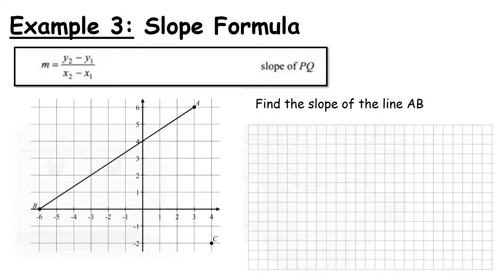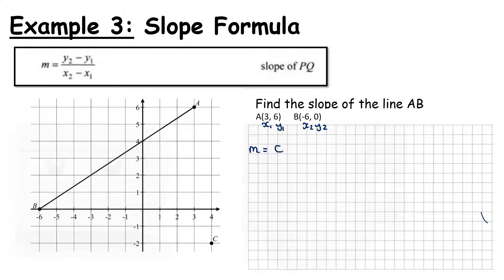Now let's calculate the slope using the slope formula. The formula is M = (Y2 − Y1) / (X2 − X1), where M is the symbol we use for slope — anytime you see the letter M when dealing with a line, it refers to slope. Using A = (3, 6) as (X1, Y1) and B = (-6, 0) as (X2, Y2): M = (0 − 6) / (-6 − 3) = -6 / -9. A negative divided by a negative gives a positive, which simplifies to 2/3. So the slope of line AB is 2/3.